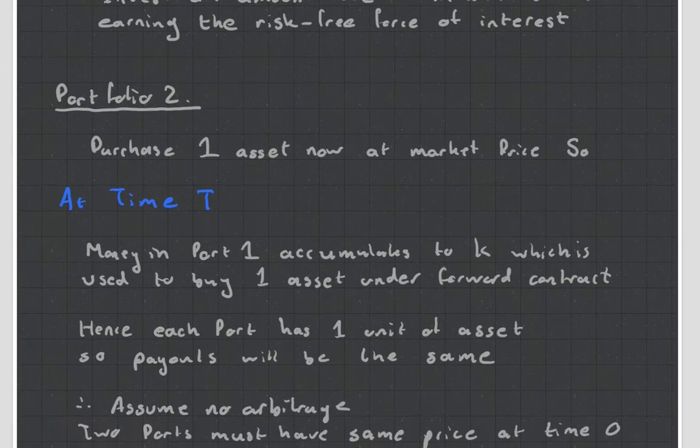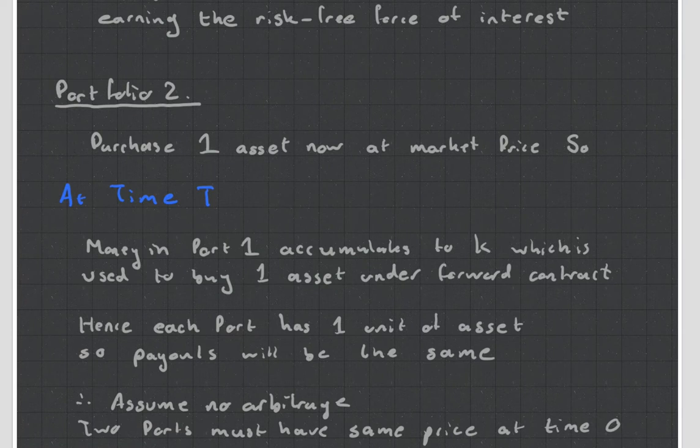At time T, or at the end of our timeline, the money in the first portfolio is going to accumulate to that value K, which is then used to buy the one apple under the forward contract. And because we've still got that apple, we can see that portfolio one has one unit of asset. And so the payout will be exactly the same.